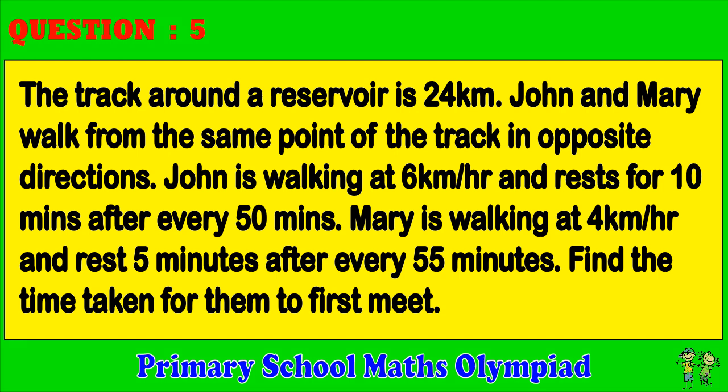Question 5. The track around a reservoir is 24 km. John and Mary walk from the same point of the track in opposite directions. John is walking at 6 km per hour and rests for 10 minutes after every 50 minutes. Mary is walking at 4 km per hour and rests 5 minutes after every 55 minutes. Find the time taken for them to first meet.